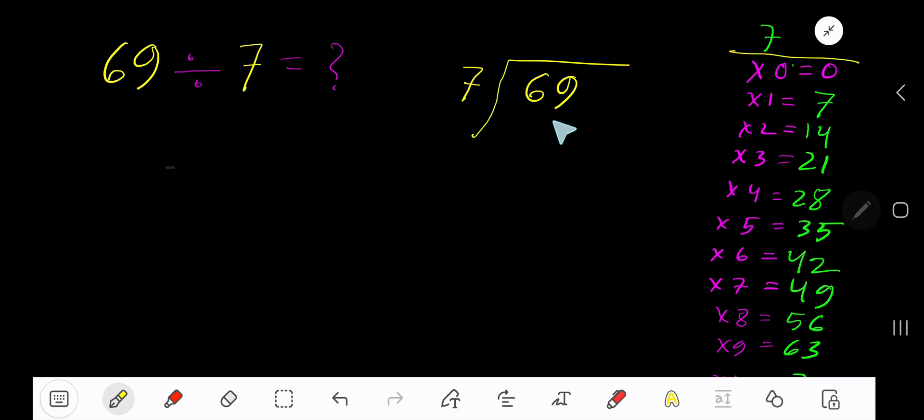This process will continue. 7 goes into 6 how many times? 1 times 7 is greater, so 0 times. Actually, since 6 is less than 7, 0 times 7 gives you 0. Subtract 6, bring down the next digit.